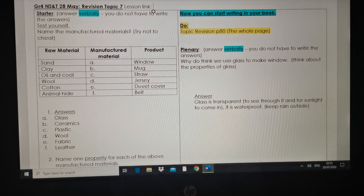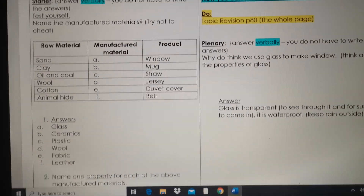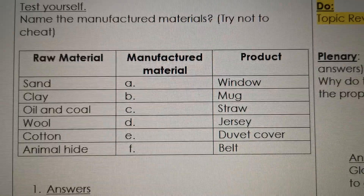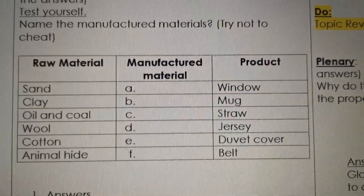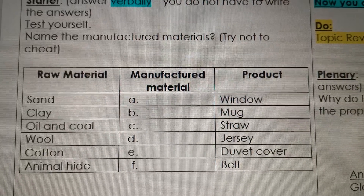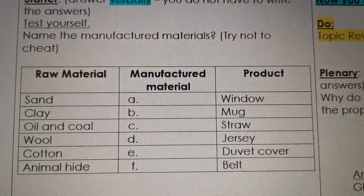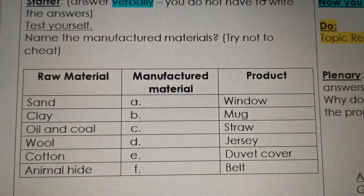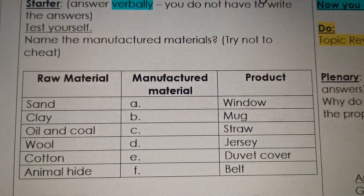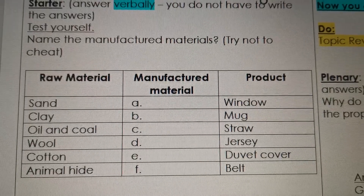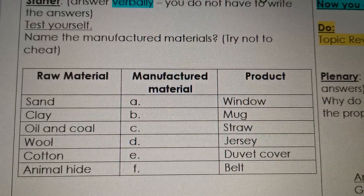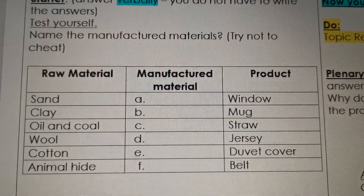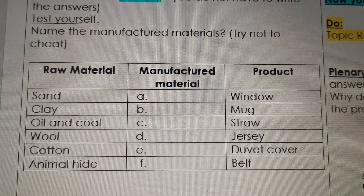Name the manufactured material and try not to cheat. Let's quickly look at the table here. They're saying sand, and the product is window — so what is the manufactured material? Then clay, and the product is mug. Oil and coal, and a straw — a straw that you drink with. What is it made out of? And then wool and a jersey, cotton, duvet cover, animal hide, and belt. Quickly think if you can answer those questions.